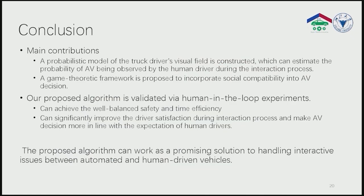To conclude, this paper has two new contributions. Number one, a probabilistic model of the truck driver's visual field is constructed, which can estimate the probability of AV being observed by the human driver during the interaction. Number two, a game-theoretical framework is proposed to incorporate social compatibility into AV decision. The algorithm is validated through human-in-the-loop experiments. It can balance safety and time efficiency, and can also significantly improve driver satisfaction during interaction processes. The proposed algorithm can work as a promising solution to handle interactive issues between automated vehicles and human-driven vehicles.